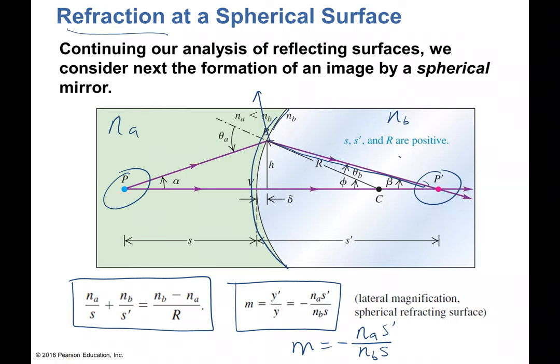Whenever you consider refraction, the sign convention — positive and negative — changes. The front is the negative side and the back is the positive side. For mirrors, the outgoing light went back toward the front, so the front was positive. Here, the outgoing light goes into the back, so the back of the surface is the positive side.